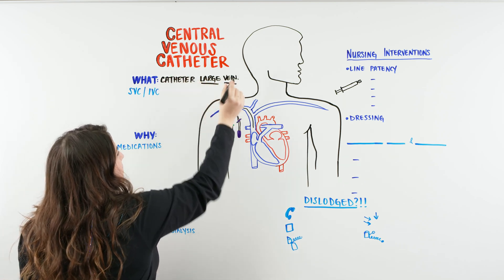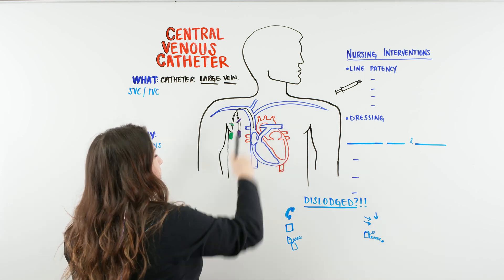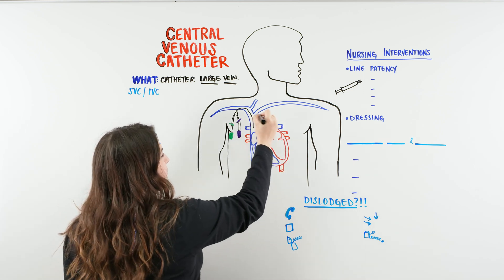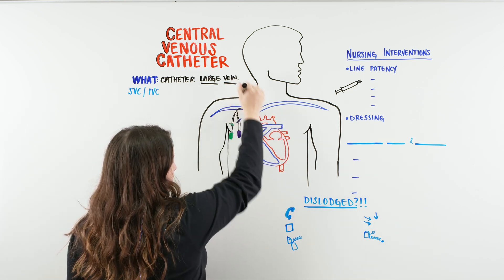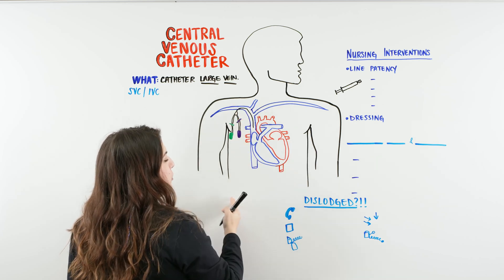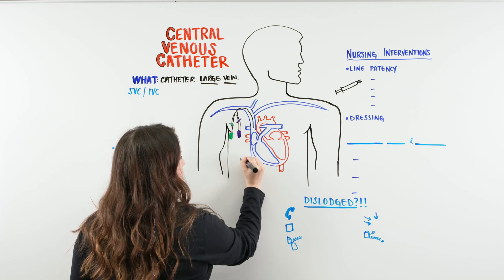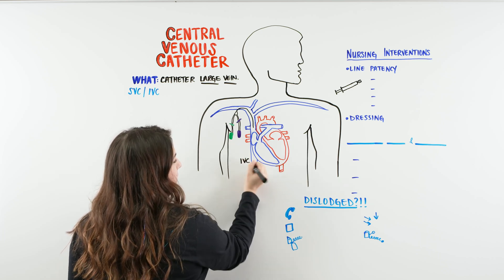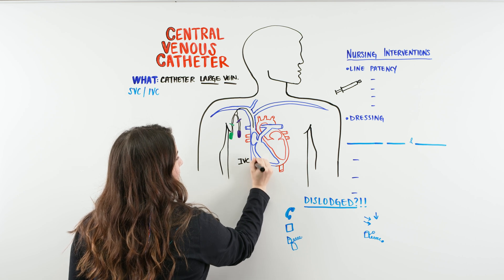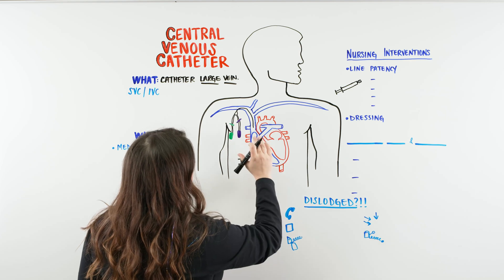So first let's talk about what is the biggest vein that we have in our body. Do you guys remember? We have the heart right here. So what is this vein that's coming from the top of the body and this vein that's coming from the bottom of the body that's returning blood back to the heart. This is our inferior vena cava, right? It's returning blood from the bottom of our body, from our legs, our abdomen, back to the heart.